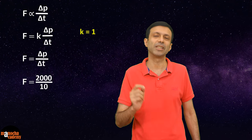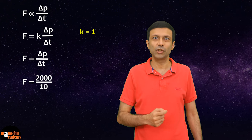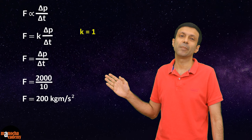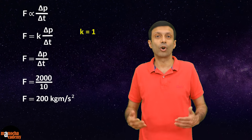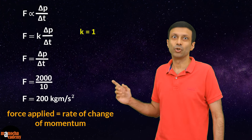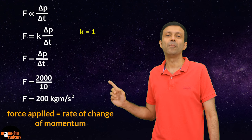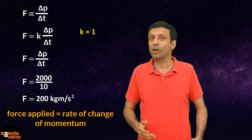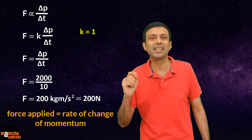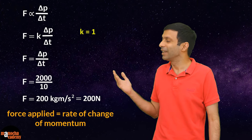In our car example, the change in momentum was 2000 kg·m/s and it took 10 seconds, giving a rate of change of momentum of 200 kg·m/s². So the force applied equals 200 kg·m/s², or 200 newtons. Note that a newton and kg·m/s² are the same unit — newton is essentially shorthand for kg·m/s², and it is the SI unit of force.